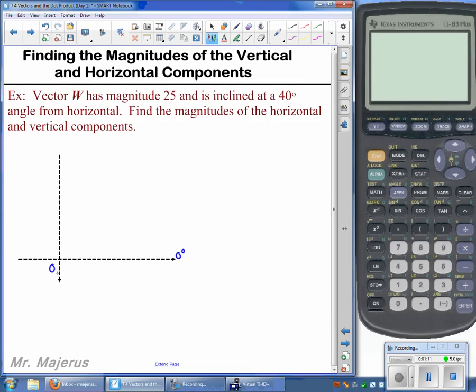Here's our origin, and if we drew in that vector, we'll go ahead and just draw in our directed line segment, 40 degrees, pretty close to about that mark there. The angle we're talking about, then, is this one here. So we have a 40 degree incline from horizontal.